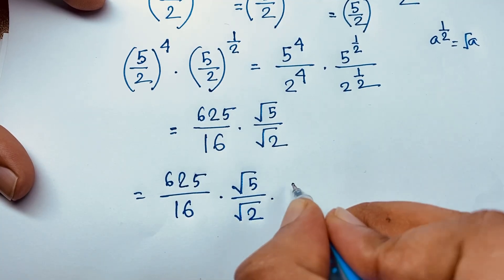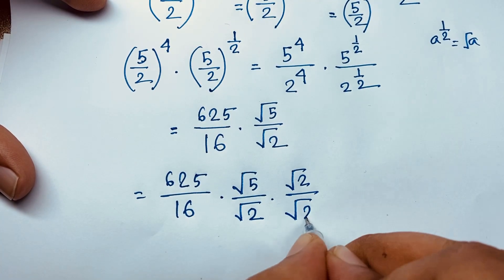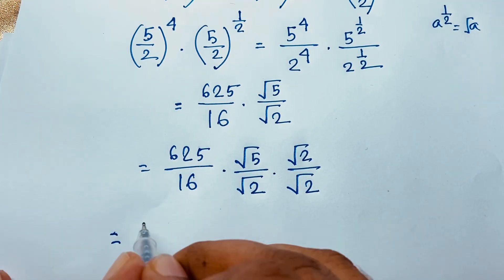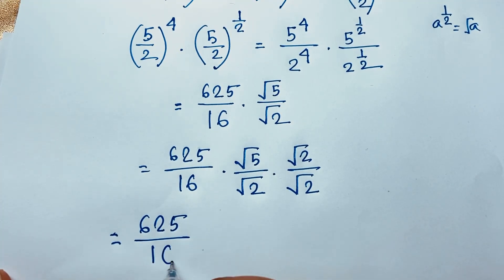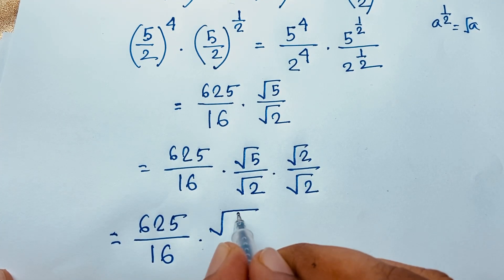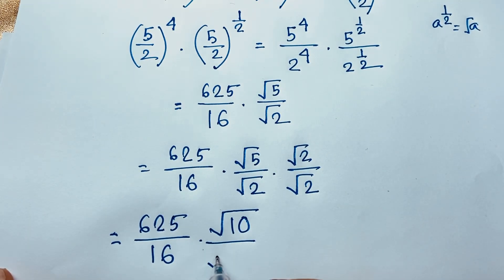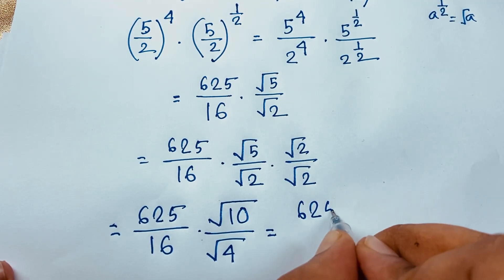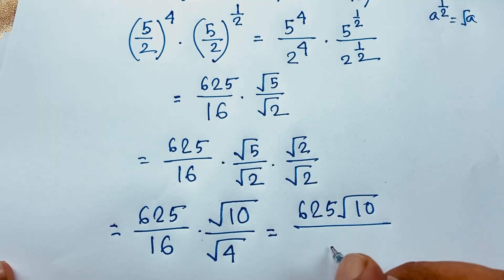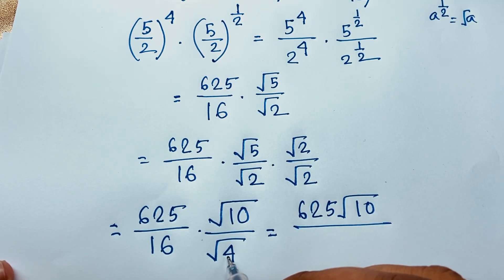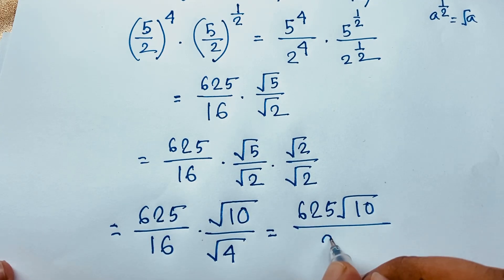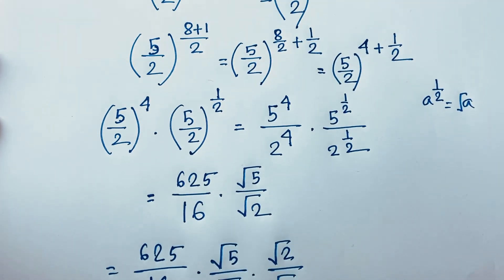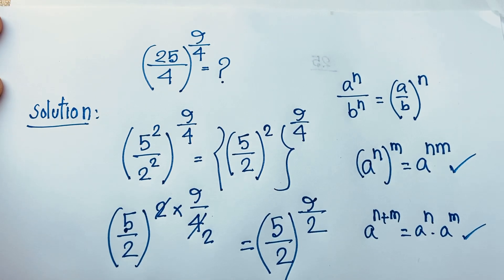To rationalize, we multiply square root 5 over square root 2 by square root 2 over square root 2. This gives square root 10 over square root 4, and square root 4 equals 2. So the final answer is 625 times square root 10 over 16 times 2, which equals 625 square root 10 over 32. If you enjoyed this video, please subscribe to my channel. Goodbye and take care.